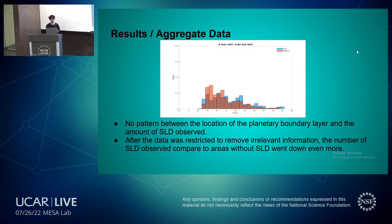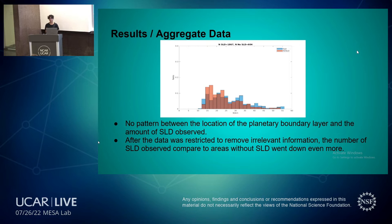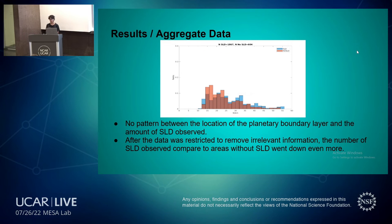These are the results for the aggregate data. Unfortunately, there was no pattern between the location of the planetary boundary layer and the amount of SLD observed compared to no-SLD observed. I made additional graphs restricting the data to remove as many variables as possible — for example, removing all data colder than negative 20 degrees Celsius to exclude convective clouds. But the data was actually moving even further from what we were hoping to see.